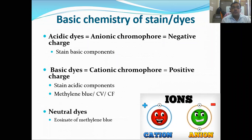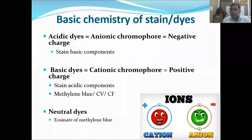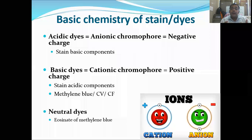The second group is basic dye, which has a cationic chromophore with a net positive charge. This generally stains the acidic components of the cell — for example, the nucleus, which has acidic components, takes the color of the basic dye, such as methylene blue. Besides these two, there is a neutral dye whose net charge is neither positive nor negative.